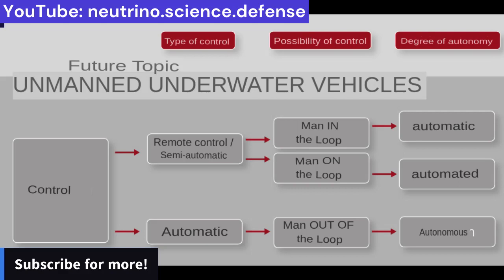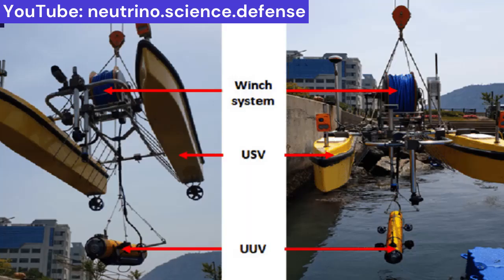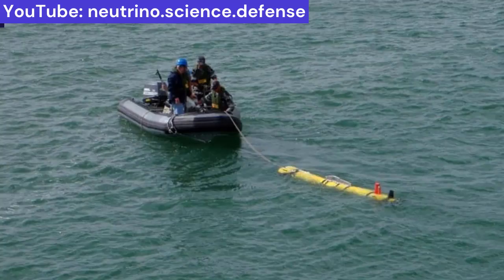Remote Control: The UUV is operated by remote control, where the control of the system and the decision on the use or release of agents is directly exercised by a human being, according to the principle of 'man in the loop.' Classic representatives are remotely operated vehicles (ROVs), which are usually connected to a control vehicle or a land station by means of a cable — an umbilical cord. The cable supplies the vehicle with power and control commands, and also relays camera images and sensor data from the vehicle back to the operator.